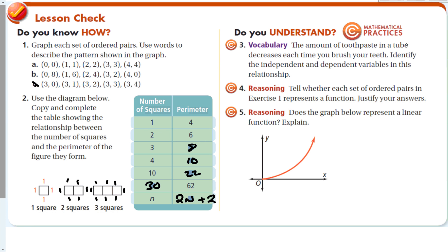The amount of toothpaste in a tube decreases each time you brush your teeth. The independent variable is the number of times you brush your teeth, and the dependent variable is the amount of toothpaste left, because the amount left depends on how many times you brush. A graph of ordered pairs is not a linear function if it is not a line. That covers section 4-2, patterns and linear functions.